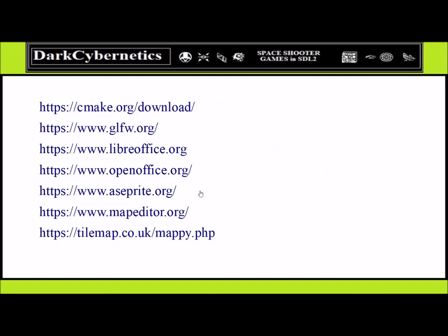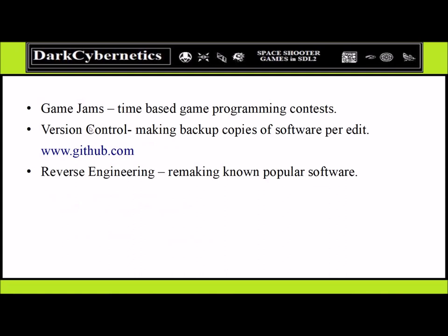For those of you using Linux, you may need to download CMake. There are other tools available like Game Jams. Game Jams are events where people go to code game projects in a time span — it could be a week, a month, or sometimes 24 hours. You can also keep control of your version control using GitHub, and if you want to re-engineer software, we would call that reverse engineering.